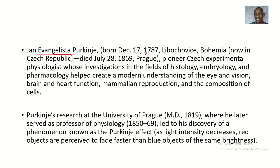Jan Evangelista Purkinje was born on December 17, 1787, in Libochovice, Bohemia — that is now the Czech Republic. He died on July 28, 1869, in Prague.